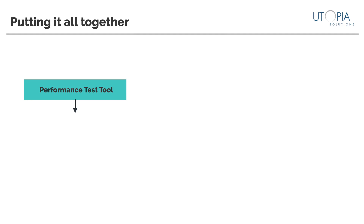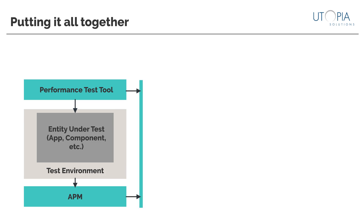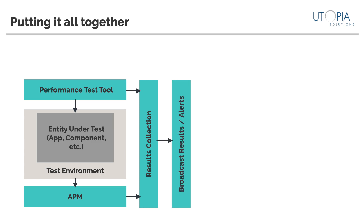First, we'll start out with the system that we're testing, and we'll need a tool to generate load and throughput. Remember that we want more than user level metrics, so ideally we're monitoring the application and infrastructure using APM solutions while the tests are executed. Next, we'll want to collect the results from both the load and APM tools and ideally put them in a time series database. Then we need a mechanism to alert the appropriate people that the tests have completed and of any anomalies that were detected.